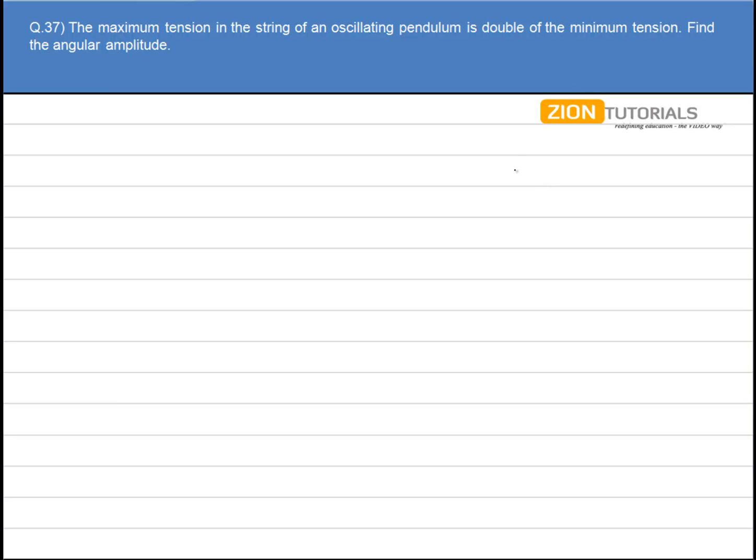Now, first of all, let's have a simple pendulum. This is its extreme position. Let's say the angular displacement is theta.